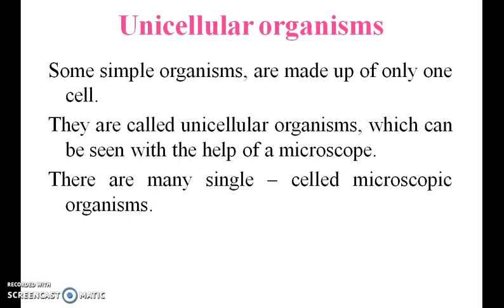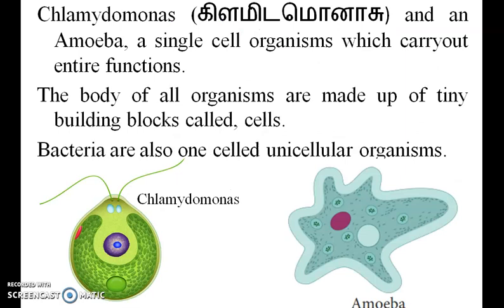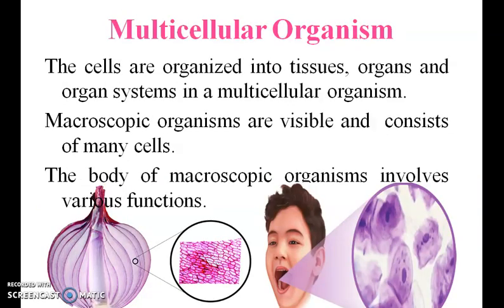Unicellular organisms: some simple organisms are made up of only one cell. They are called unicellular organisms, which can be seen with the help of a microscope. The body of all organisms is made up of a tiny building block called cells. Bacteria are also one-celled organisms.